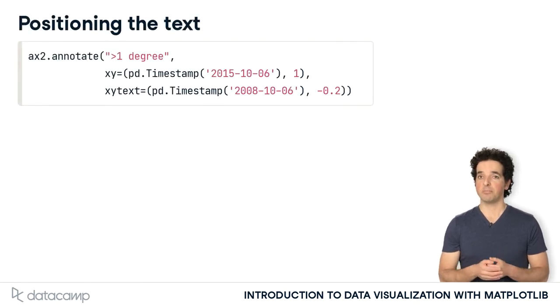The annotate method takes an optional xytext argument that selects the xy position of the text. After some experimentation, we've found that an x value of October 6th, 2008 and a y value of negative 0.2 degrees is a good place to put the text.